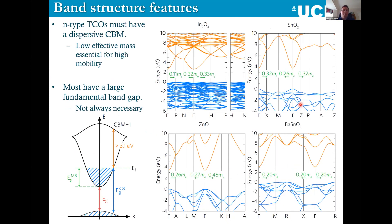Looking at the typical band structures of N-type transparent conducting oxides — indium oxide, tin dioxide, zinc oxide, and barium stannate — they all have very dispersive conduction band minima shown in orange, with relatively flat valence bands. They have low effective masses at the conduction band minimum, meaning high mobility when donor-doped. Not all have a very wide fundamental band gap, but that's not always necessary — donors injecting electrons directly into the conduction band open up the Moss–Burstein shift, making an undoped non-transparent material transparent when doped.